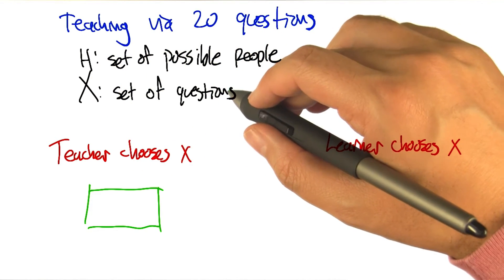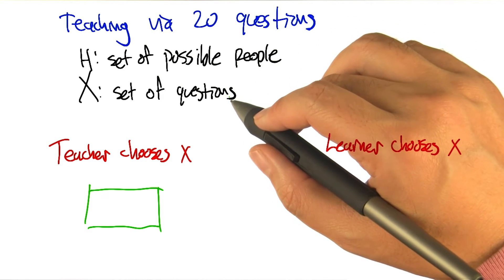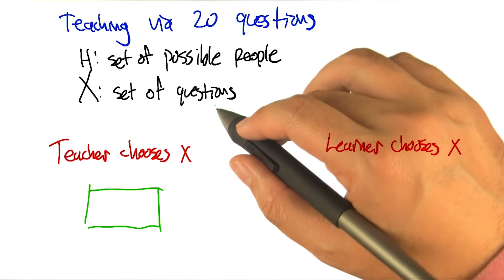So X, they're kind of like training examples. That's how the learner is getting information about what the right answer is. But no question in and of itself might actually be sufficiently revealing of what the hypothesis is.